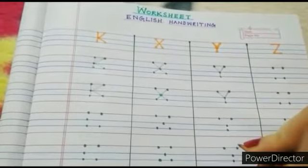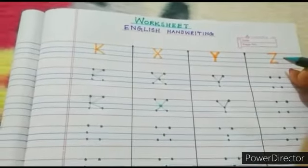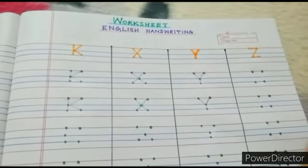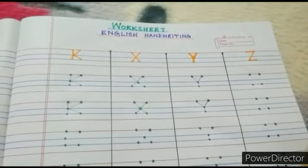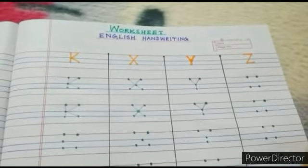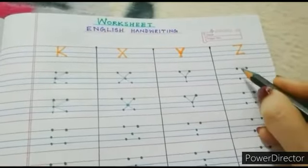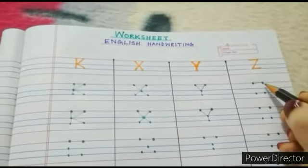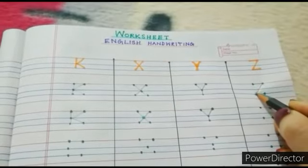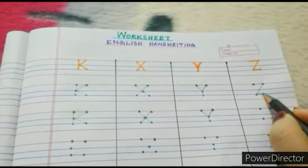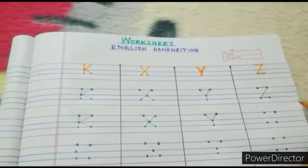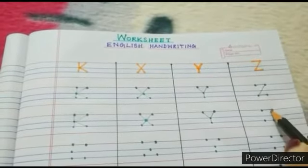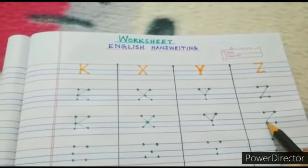Finally, the last letter which we are going to learn today is Z. The letter Z requires a pair of slipping lines and one right slanting line. First, we need to draw a slipping line, then follow it up with a right slanting line, and finally another slipping line. Like this. Let us try one more time: slipping line, right slanting line, another slipping line.